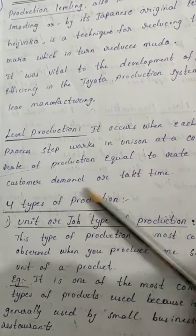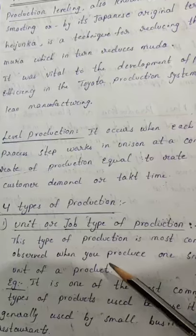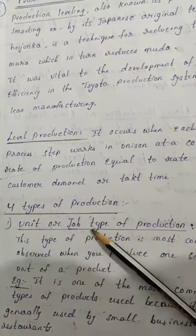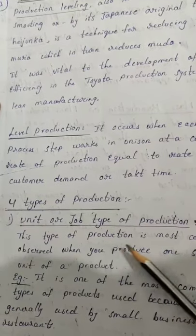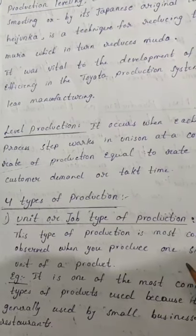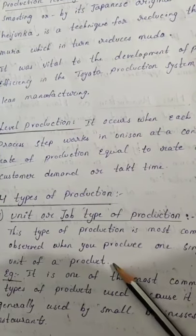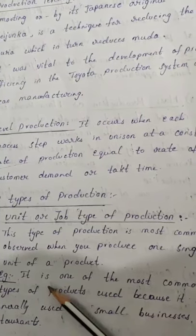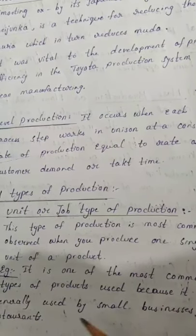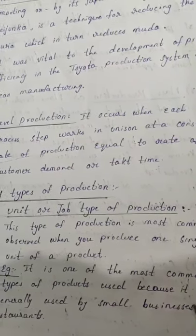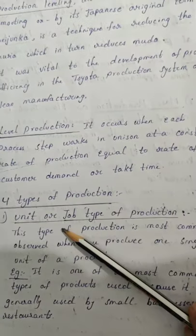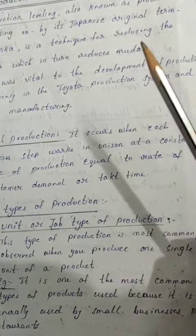There are four types of production. First one is unit or job type of production. This type of production is most commonly observed when you produce one single unit of product. It is one of the most common types used by small businesses like restaurants and oven shops. That is called unit or job type of production.